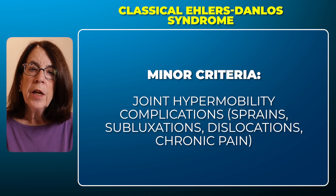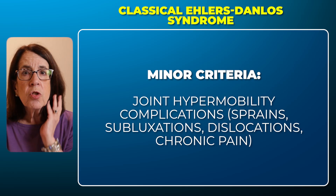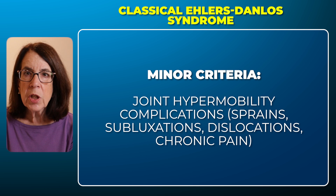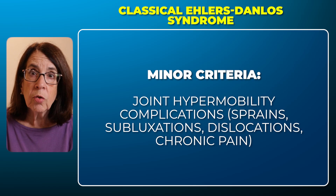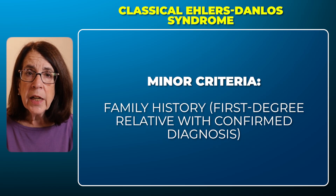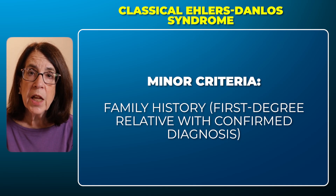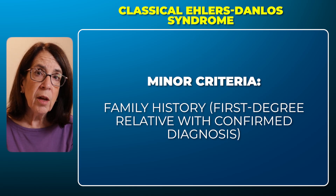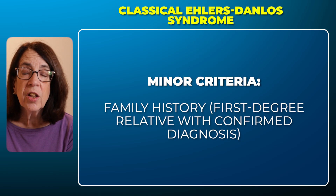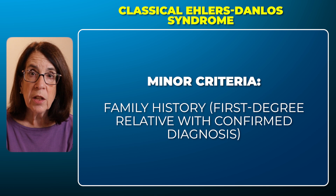Another minor criterion is complications of joint hypermobility, which may include sprains, subluxations, or dislocations of the joints, or the chronic pain sometimes seen in conjunction with joint hypermobility. Finally, the last minor criterion is a family history of classical Ehlers-Danlos Syndrome, specifically a first-degree relative — a parent, sibling, or child — who has had a confirmed diagnosis.